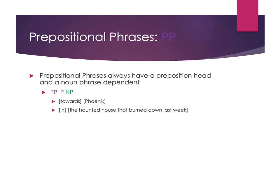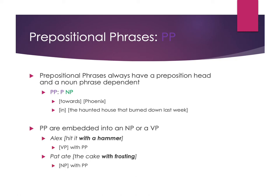Prepositional phrases can be embedded either into a noun phrase or into a verb phrase based on the kind of information they're giving you. If I say 'Alex hit it with a hammer,' the phrase 'with a hammer' tells me something about how the hitting took place, so it goes with the verb phrase. But if I say 'Pat ate the cake with frosting,' 'with frosting' isn't about how the eating took place — it's only telling me something about the noun, that the cake has frosting. So in that case it attaches to the noun phrase. We have to think about what information a phrase is connecting to in order to determine where we attach it.